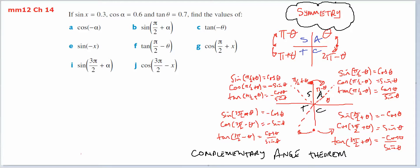This is for Year 11 Methods. It comes out of Chapter 14. It's how to use symmetry and the Complementary Angle Theorem to find angles in different quadrants.